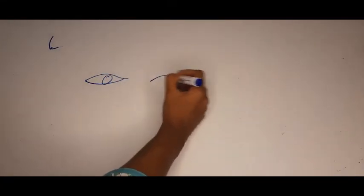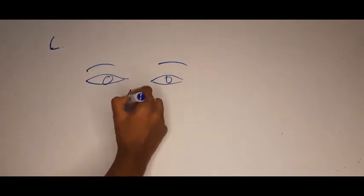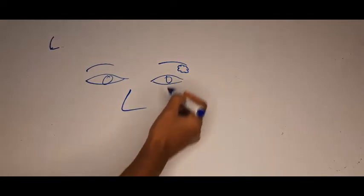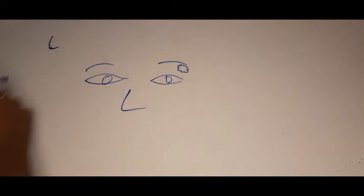And L for lacrimal. Lacrimal gland, if you draw a face, eyes and eyebrows, lacrimal gland comes somewhere here. So this is also on the lateral part. This is how you remember L, F, and T.